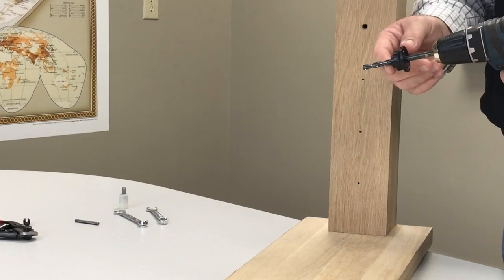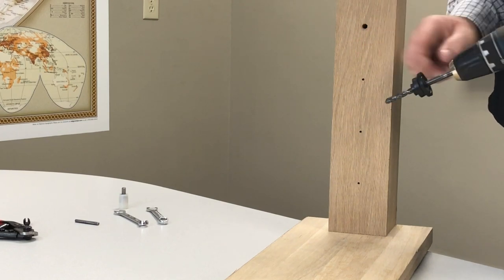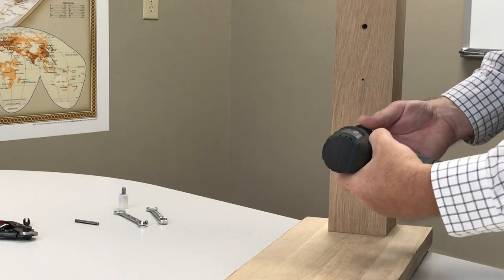You're going to want to drill a 9/32 inch diameter hole at least an inch and a half deep into each of the positions that you just marked on your post.